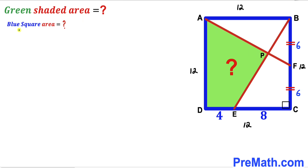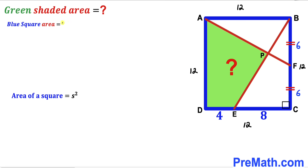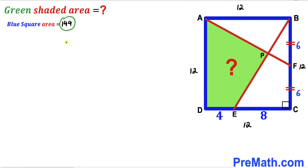Let's calculate the area of blue square ABCD. Recalling the formula: area equals s squared, where s is the side length. Our side length is 12, so the area is 12 squared, which equals 144 square units.